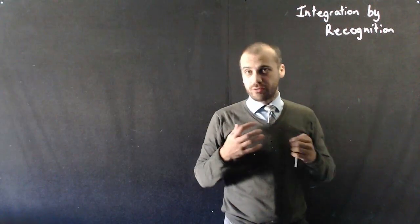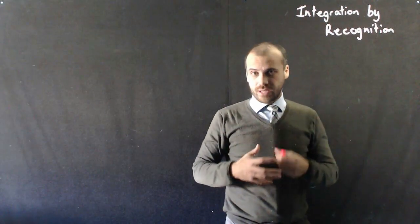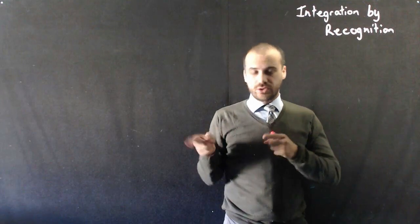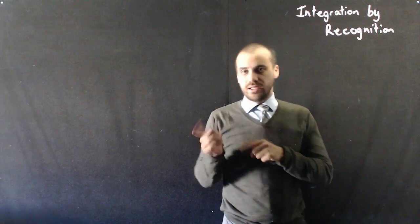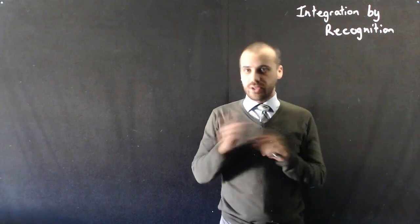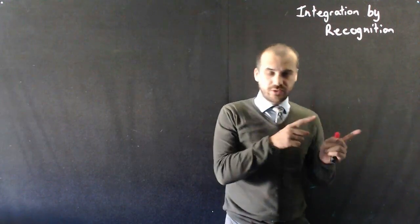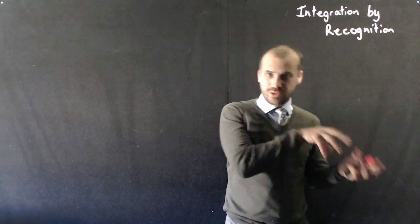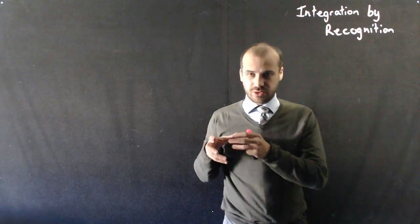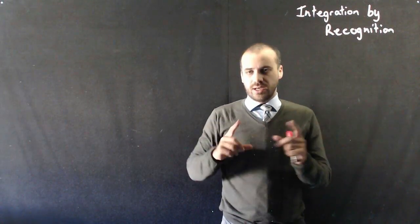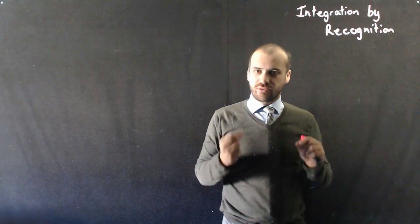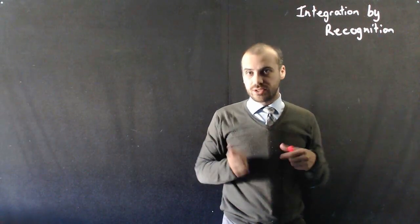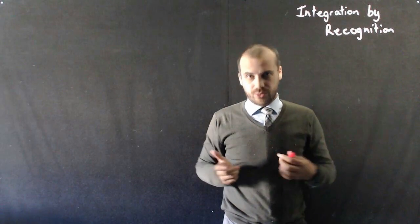This topic is integration by recognition. By now, hopefully you've come to understand that derivatives and integrating are the opposites of each other. Find the derivative and you find something, and then if you integrate that, you'll go back to the original. We can use that fact to integrate things that are too difficult to integrate any other way.